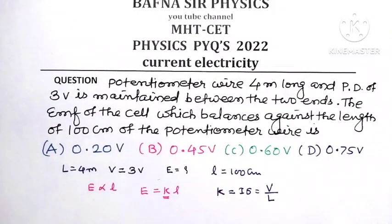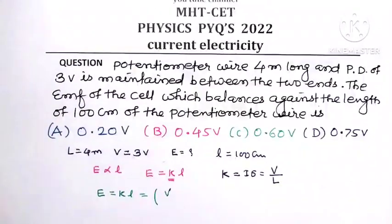So here, E equals K into L, equals V divided by L times the balancing length l. What is the potential difference V given?